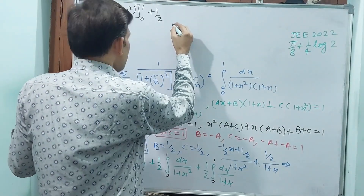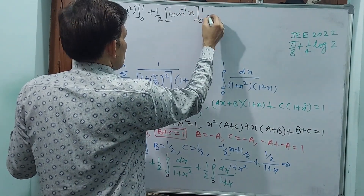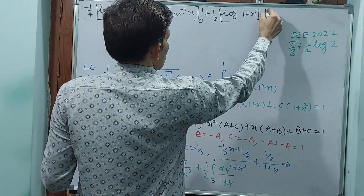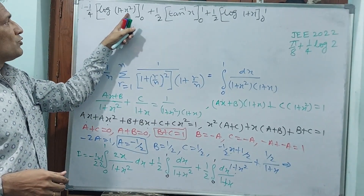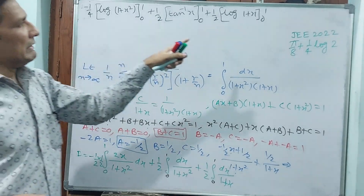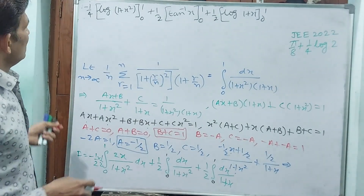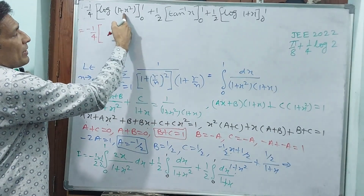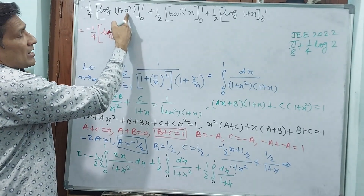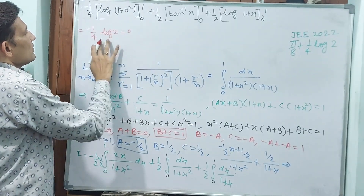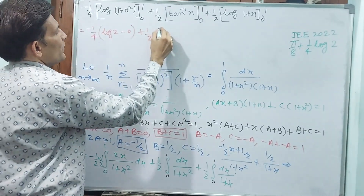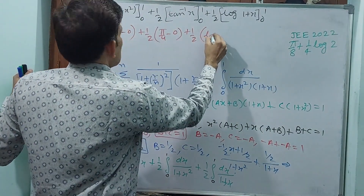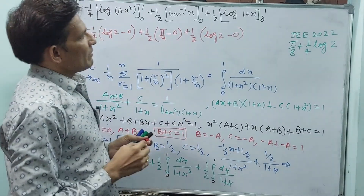Applying limits: minus 1/4 times [log 2 minus log 1] equals minus 1/4 log 2. Plus 1/2 times [tan inverse 1 minus tan inverse 0] equals 1/2 times pi/4 equals pi/8. Plus 1/2 times [log 2 minus 0] equals 1/2 log 2.